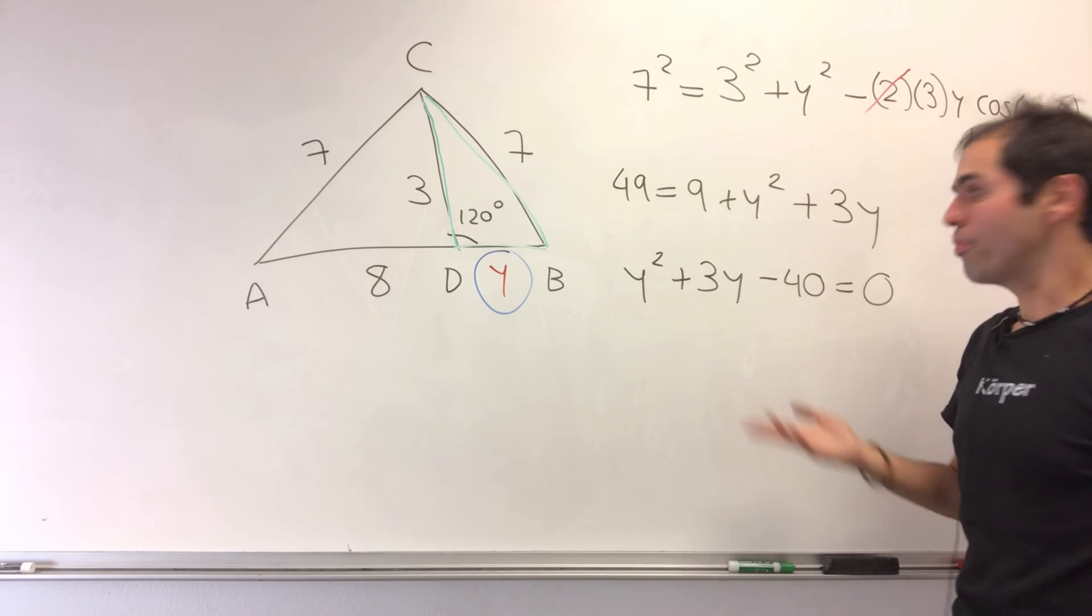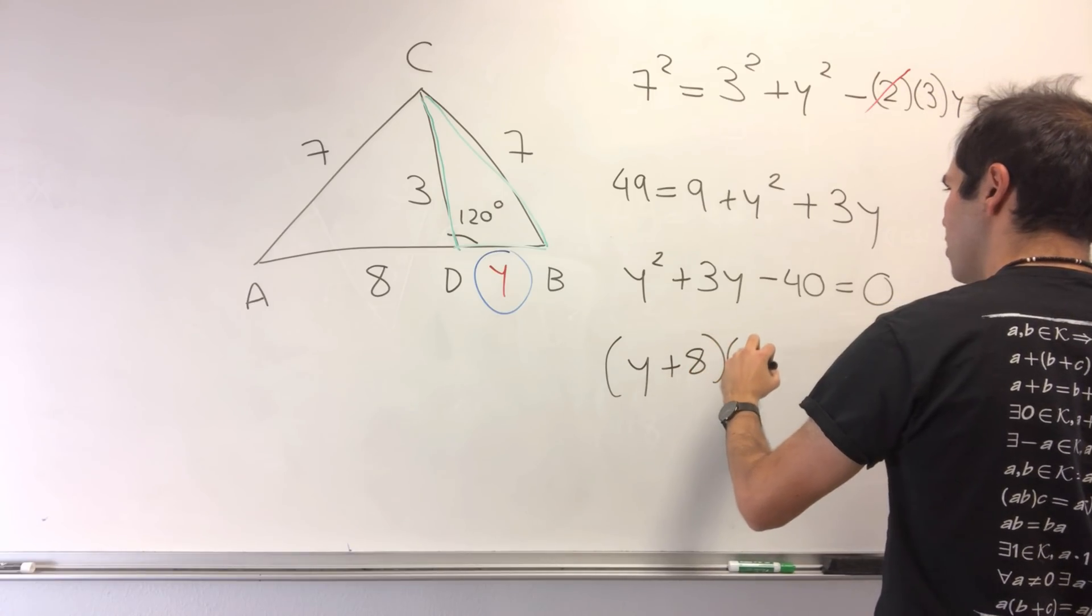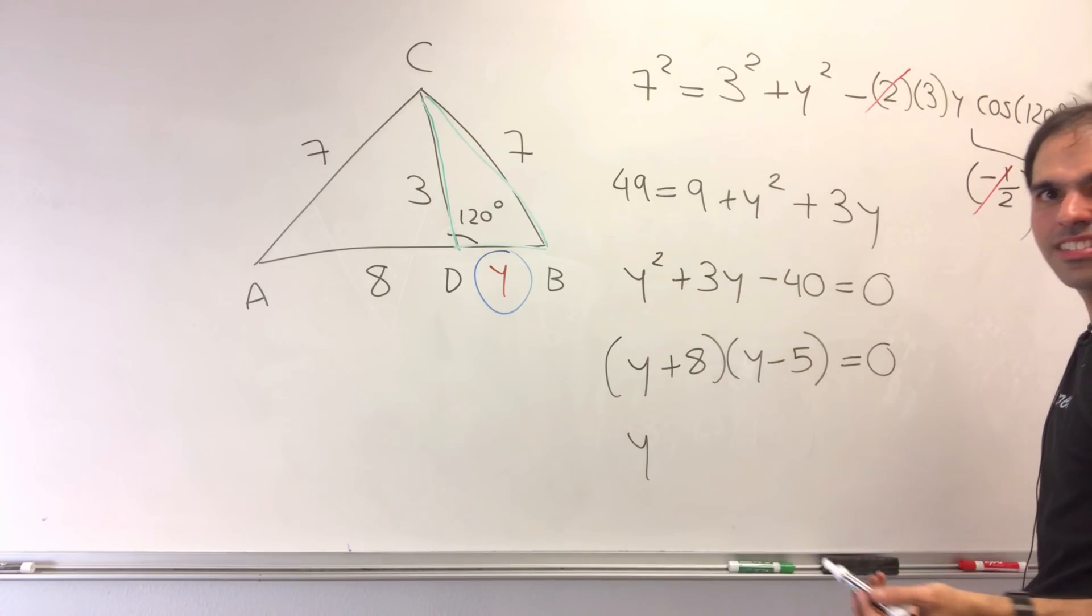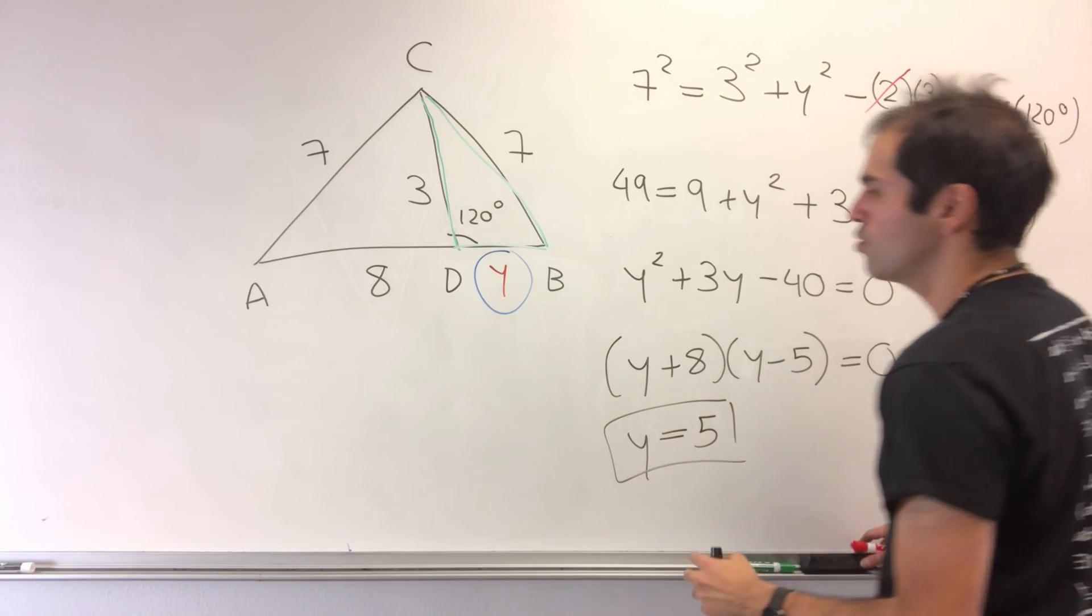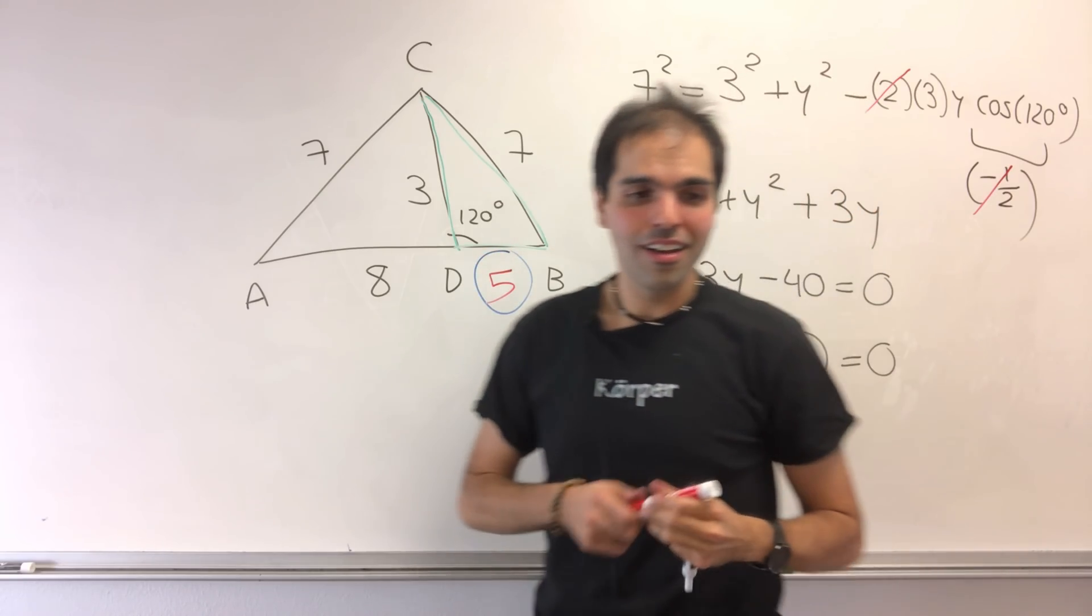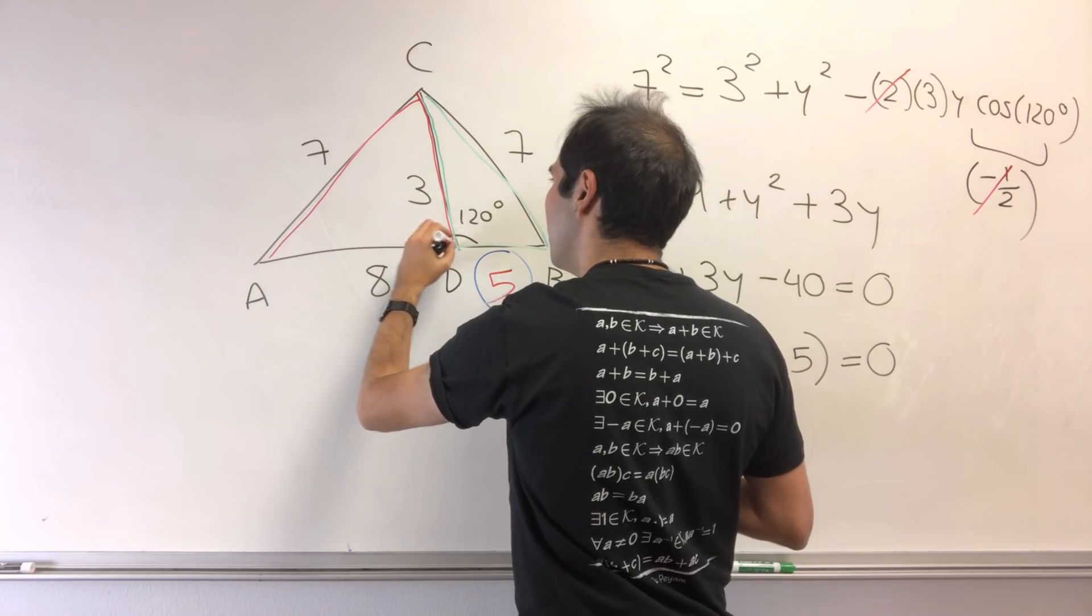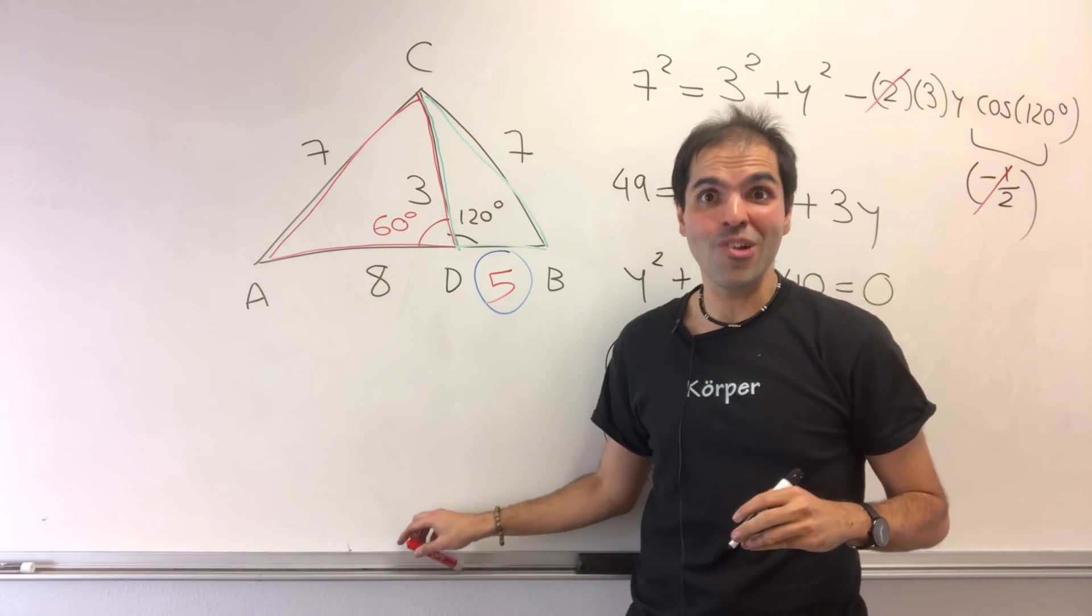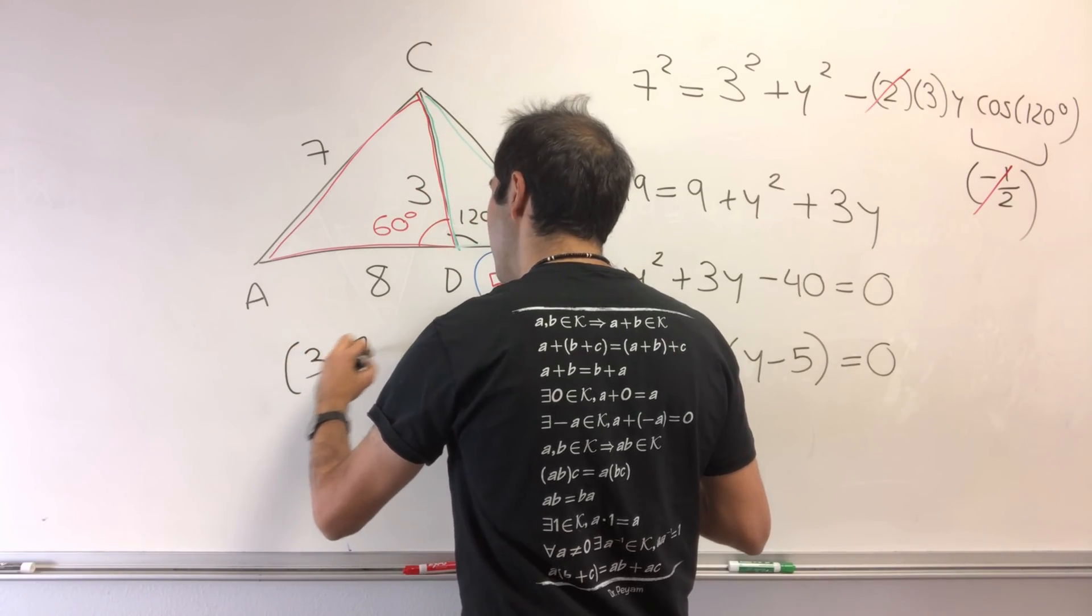The cool thing is this surprisingly factors out as (y+8)(y-5) = 0. So either y = -8, but that doesn't make sense, or y = 5. But this is not the cool thing. If you look at this triangle, the other angle is 60 degrees. After 30 years, the miraculous (3,7,8) triangle reappears.